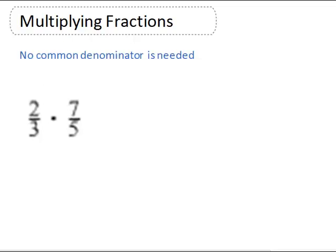We are ready to multiply straight across, which means we multiply the numerators together and the denominators together. So 2 times 7 is 14 and 3 times 5 is 15. We know that 14 and 15 do not have any common factors, so this is the lowest term.